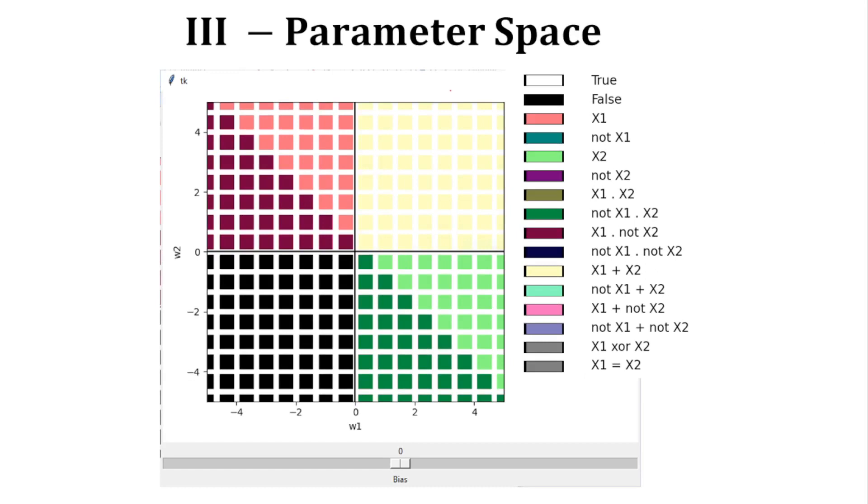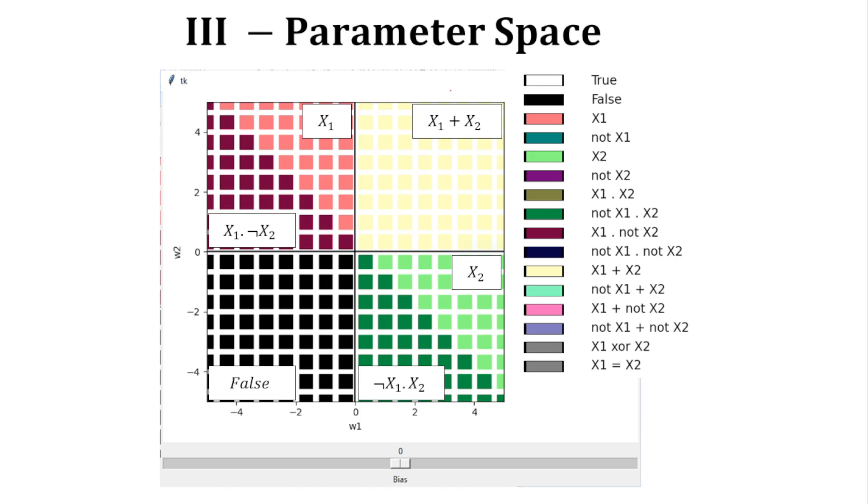Here are the 2D maps of parameter space with w1 and w2 along the axes and for a null bias. On the legend, there is a color code for each region. The brighter is the color, the more the truth table contains 1 and vice versa. For example, false is black because it always returns 0 and true is white because it always returns 1.